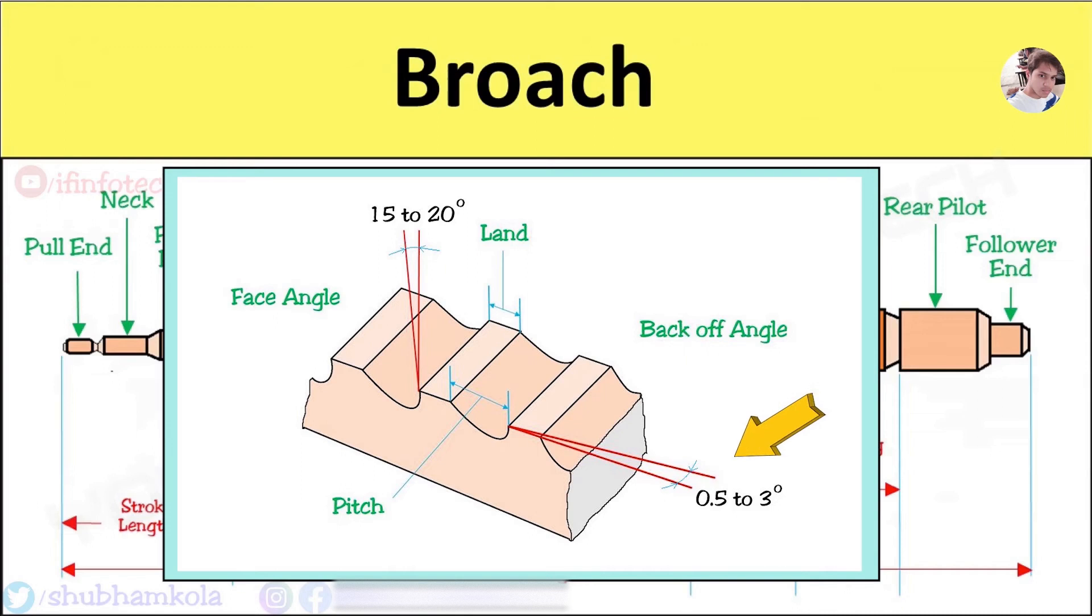Next is the back off angle, also known as clearance or relief angle. It prevents rubbing of the land. This back off angle is between 0.5 to 3 degrees.